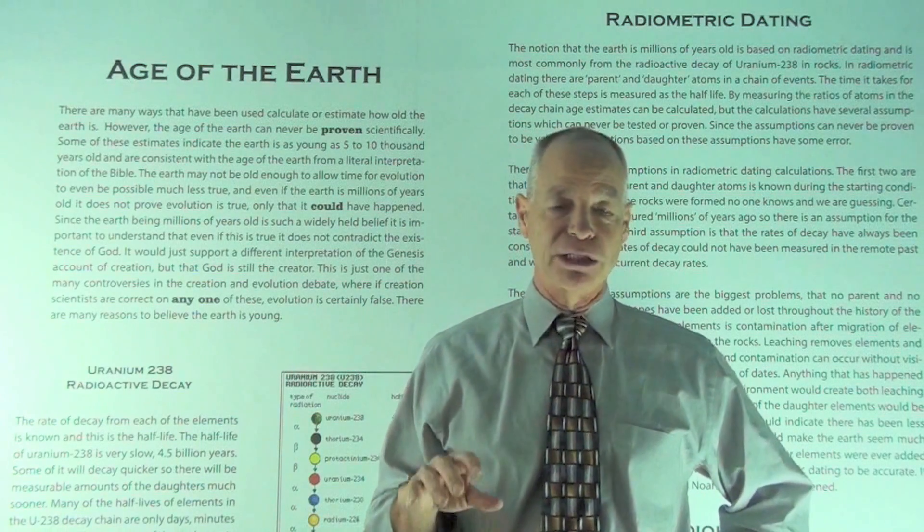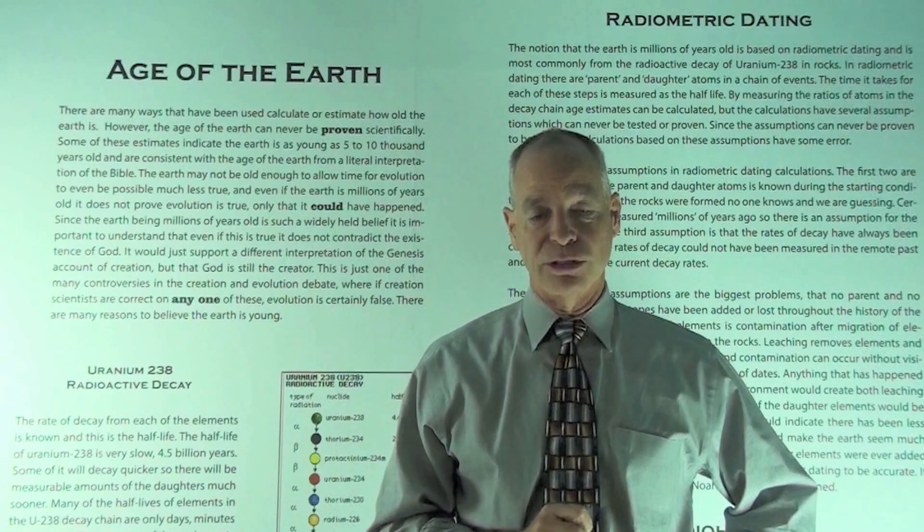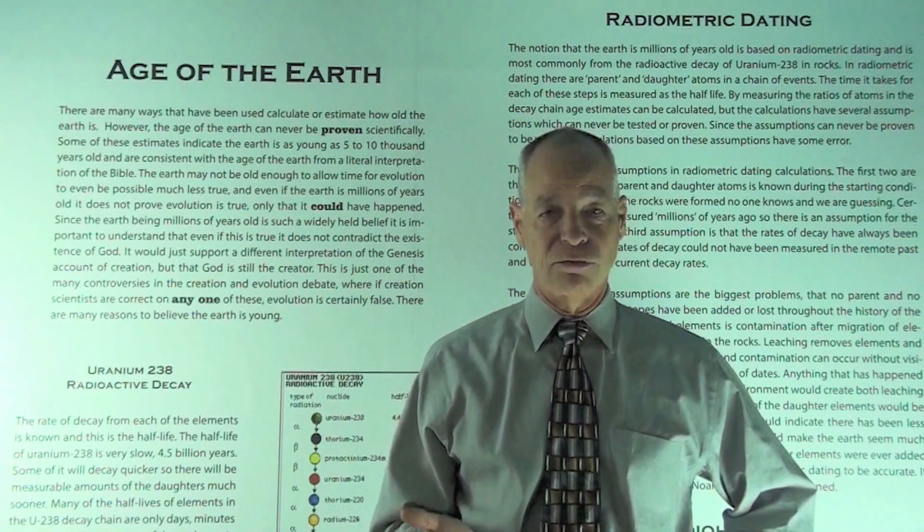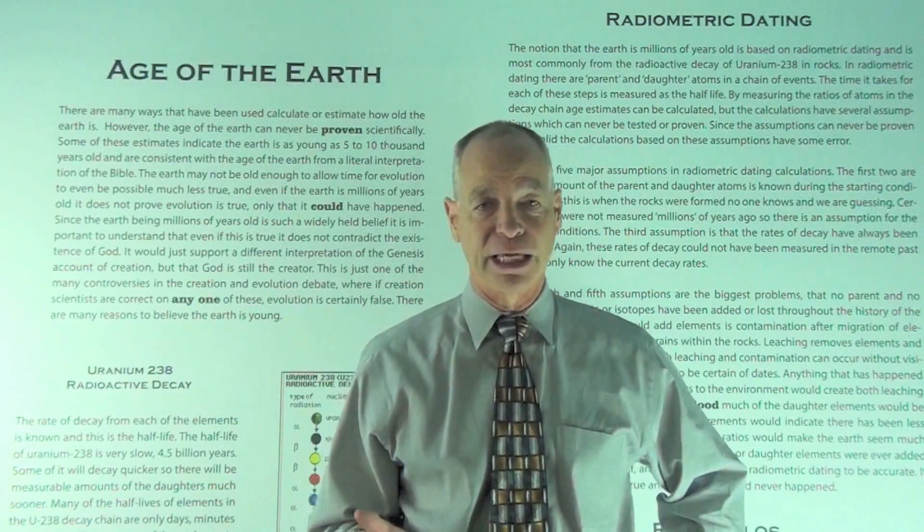Now the problem is, to do these calculations, you have to make assumptions. There's five major assumptions, and that is what the people that don't believe the Earth is old, they use these assumptions as evidence of that or as an argument against it.